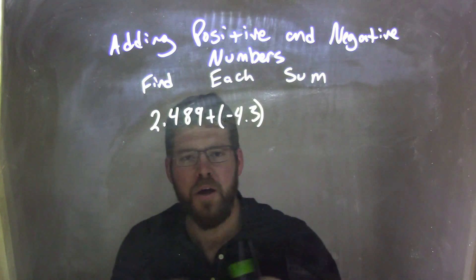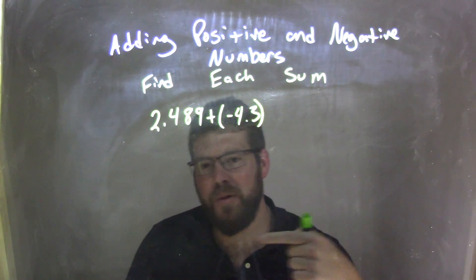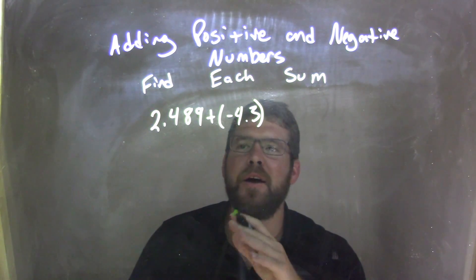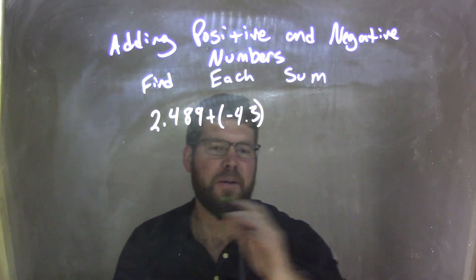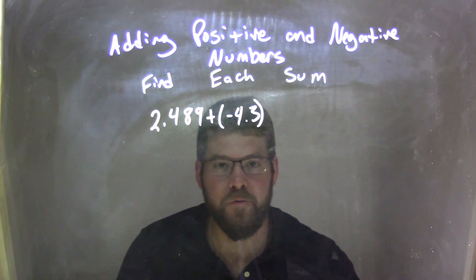I think of it like a tug-of-war around zero. If the negative is larger, it's going to be on the negative side when we get rammed together. If the positive is larger, it's going to be on the positive side. But in this case, the negative is larger, so my final answer is going to be negative.